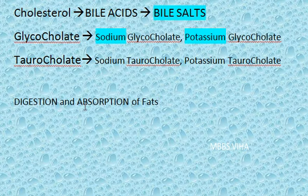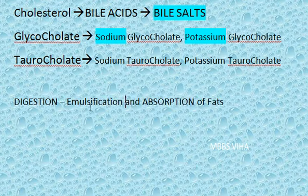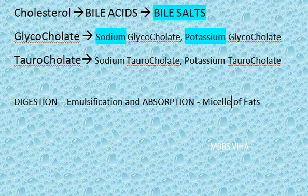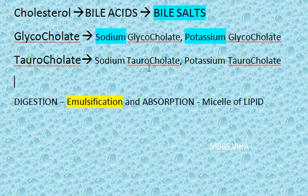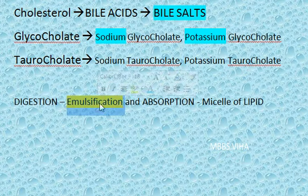In digestion, bile salts help by emulsification, and in absorption they help by micelle formation. Emulsification is a very important word in the bile salts chapter — whenever you write an answer, highlight emulsification. Bile salts are the most efficient biological emulsifying agents.